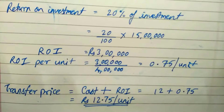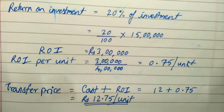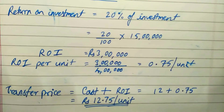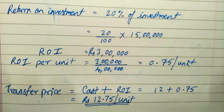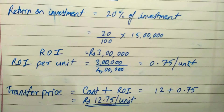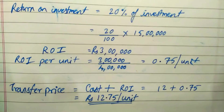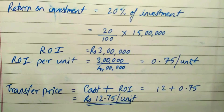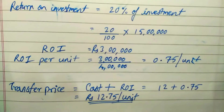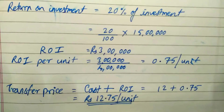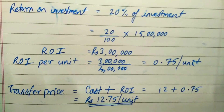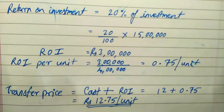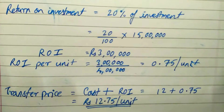Now we have the cost and the ROI per unit, so calculating the transfer price is straightforward. Transfer price equals cost plus ROI: cost is 12 rupees and ROI is 0.75 rupees, so the transfer price comes to 12.75 rupees per unit. This is your transfer price by the first method of cost plus ROI.